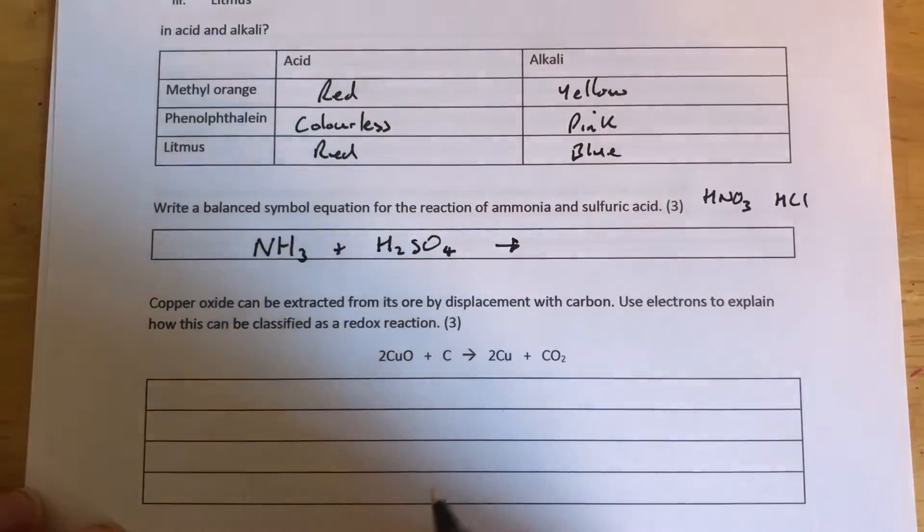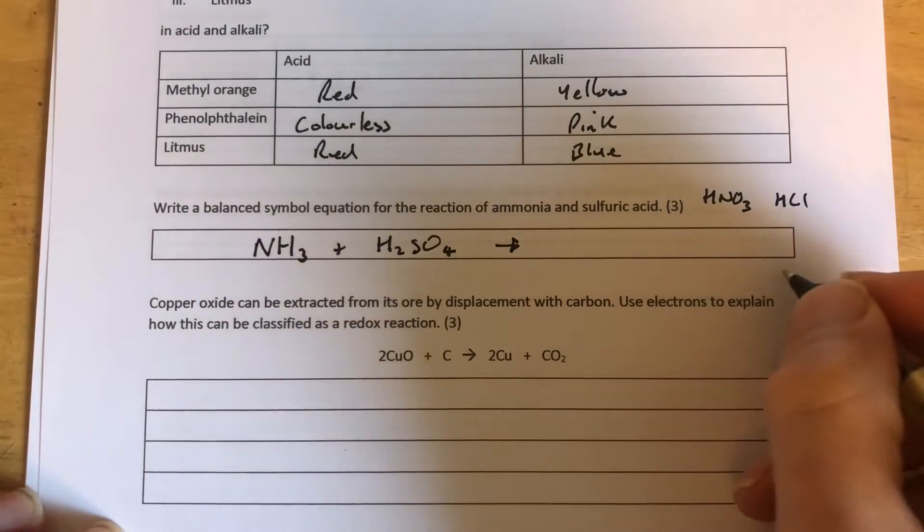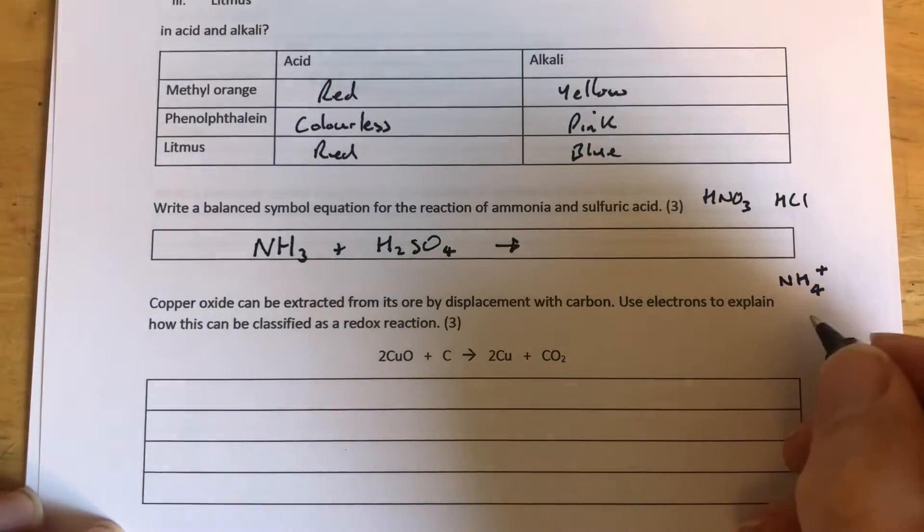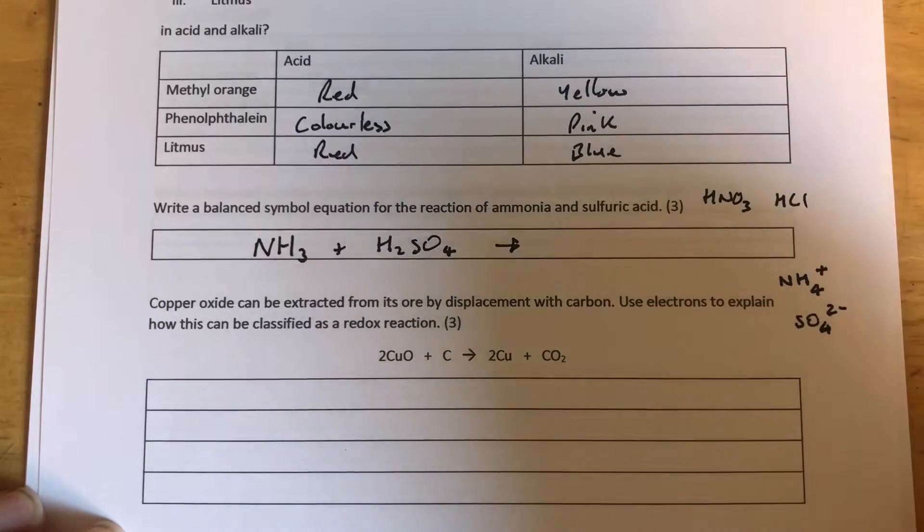When those two react, they neutralize to make a salt, an ammonium salt. The ammonium ion has the formula and charge NH4+, so you need to know that as well. The sulfate ion has the formula SO4 and the charge 2-.